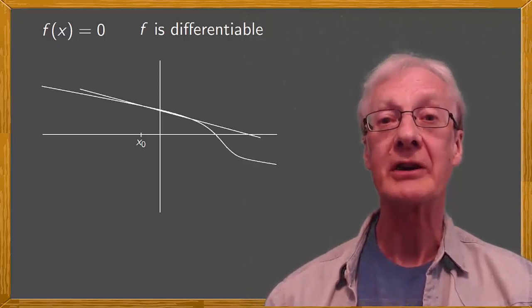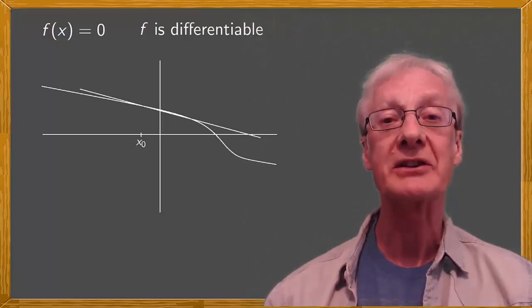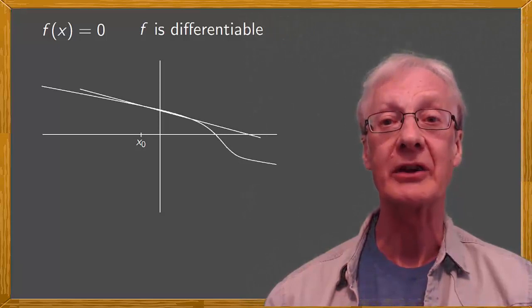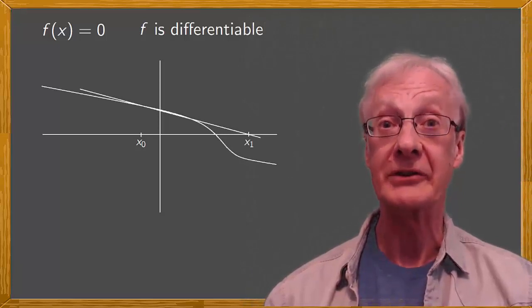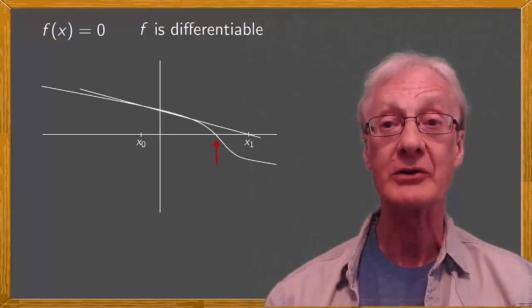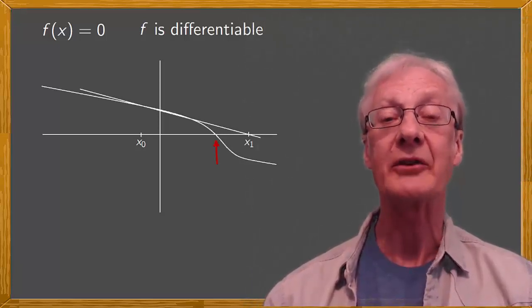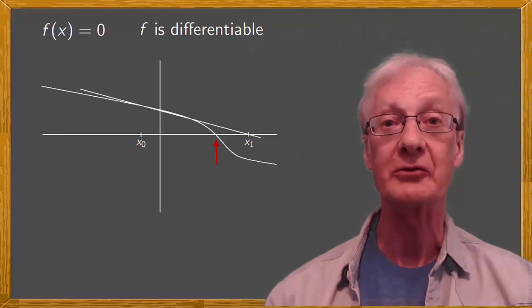Instead of considering the function f of x, we consider the tangent line to it at x0, and where this intercepts the x-axis, x1. Of course, this isn't the solution of our equation, but we can take it as a first approximation of the solution.